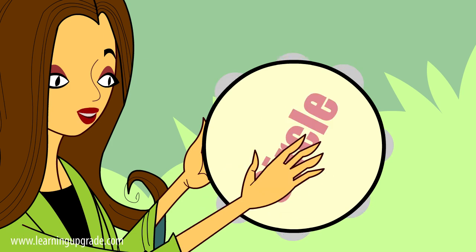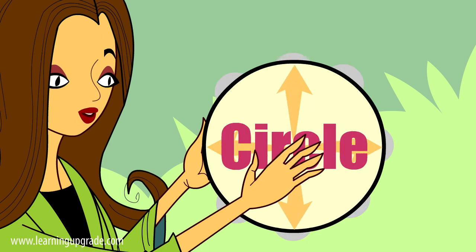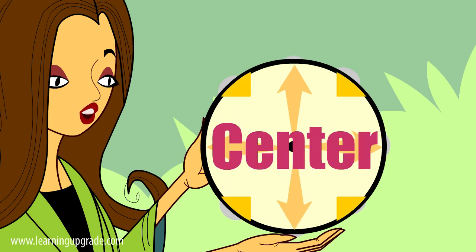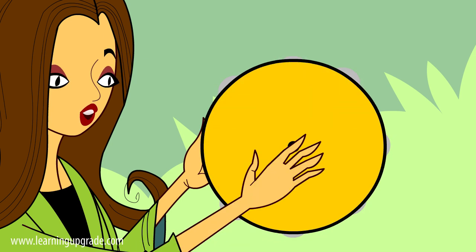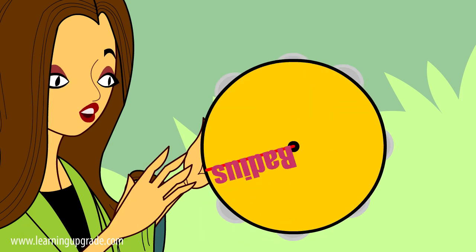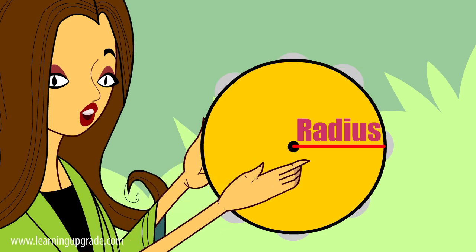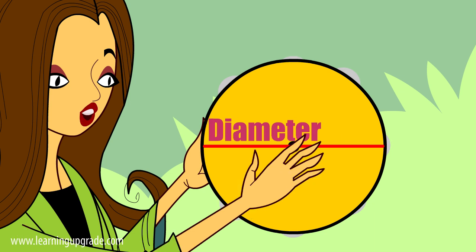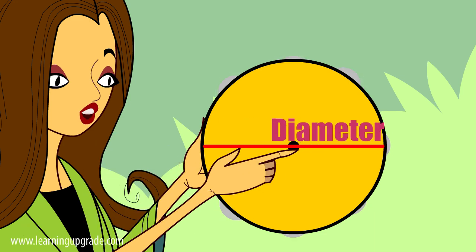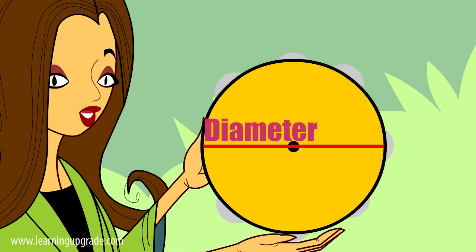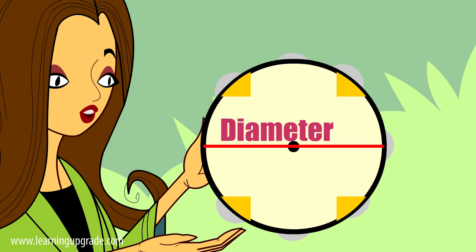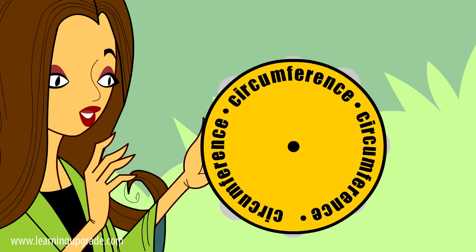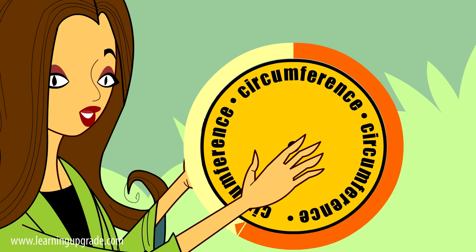A circle is a shape with all points the same distance from the center point. A radius is a straight line from the center to the circle's edge. A diameter is a line across the endpoints of a circle that passes through the center point. A circumference is the distance round the circle.